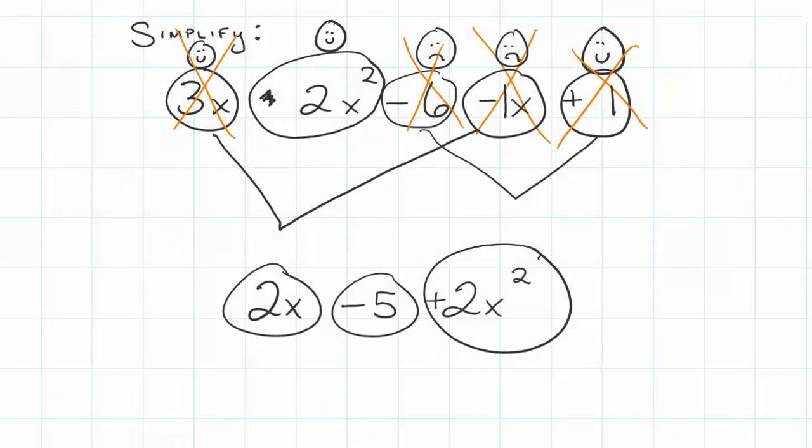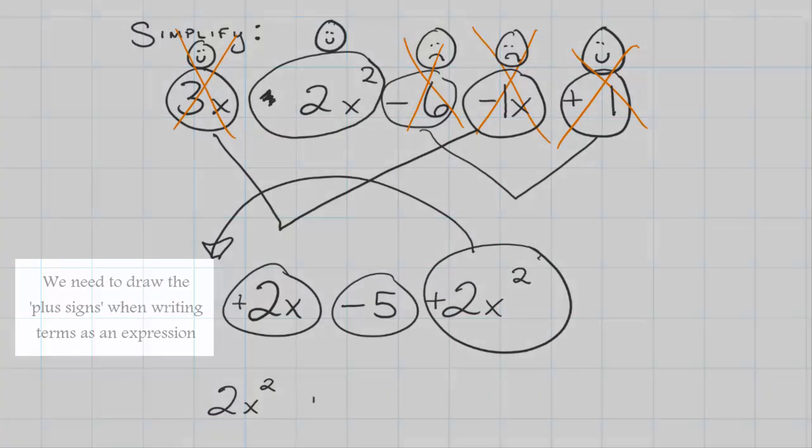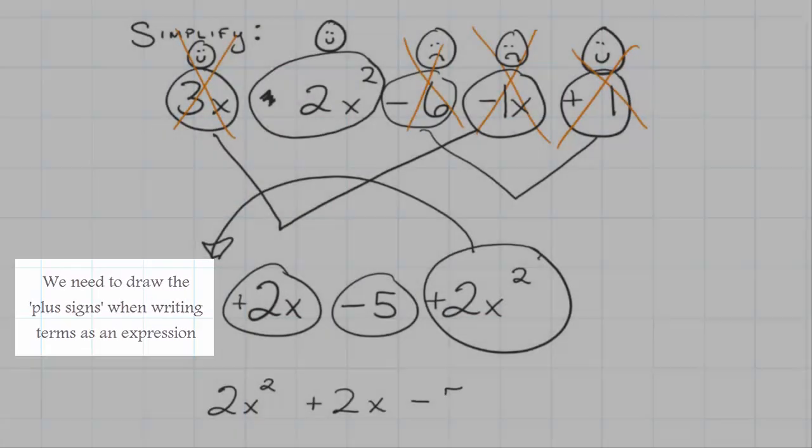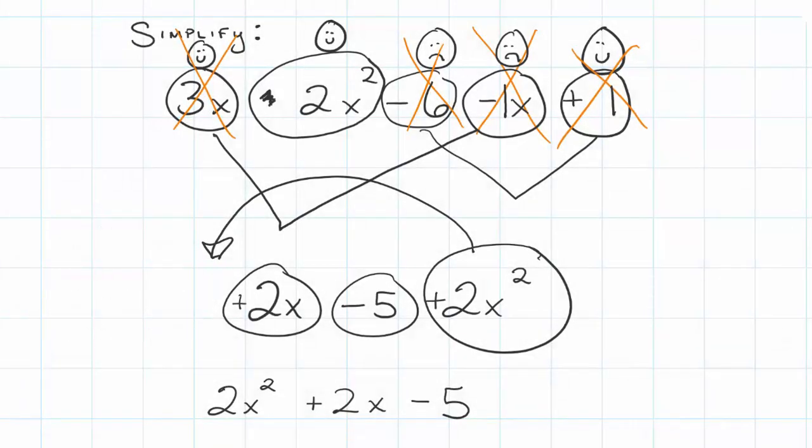Our simplified expression if we write it all out, we can put these in any order that we want. I like to put any variables with exponents in front. So I'm gonna put the 2x squared first. I'm gonna follow it with my positive 2x. Then I'm gonna end it with the number that doesn't have a variable. So our simplified expression is 2x squared plus 2x minus 5.